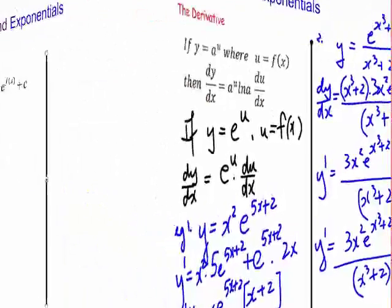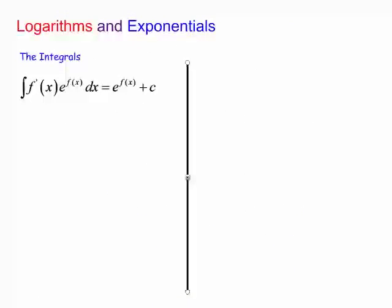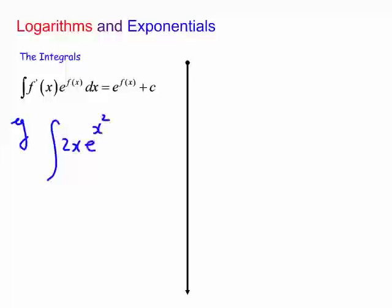Now let's move to integrals. The integral rule is the reverse of differentiation: as long as we have the function's derivative at the front of the exponential, it reforms the original exponential. For example, the integral of 2x times e to the x squared dx — since 2x is the derivative of x squared — the answer is just e to the x squared plus c.